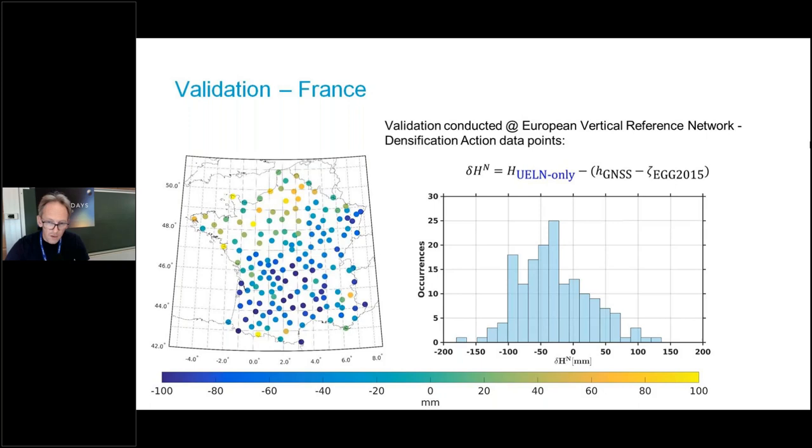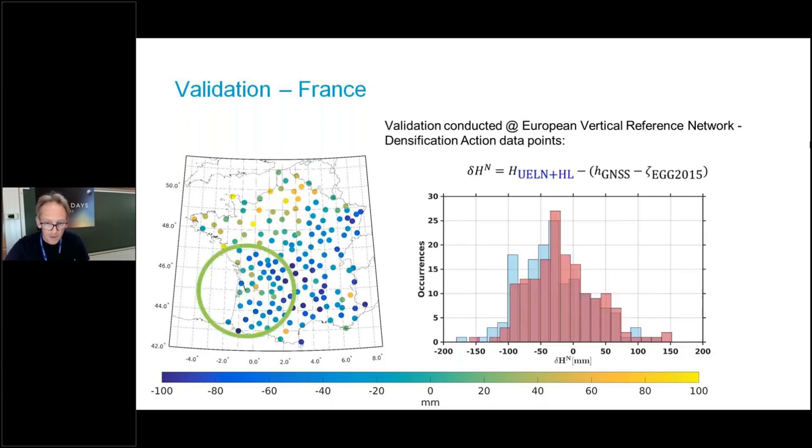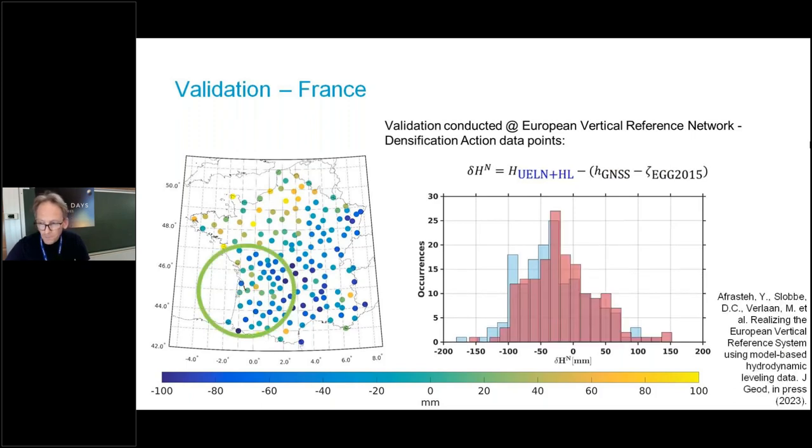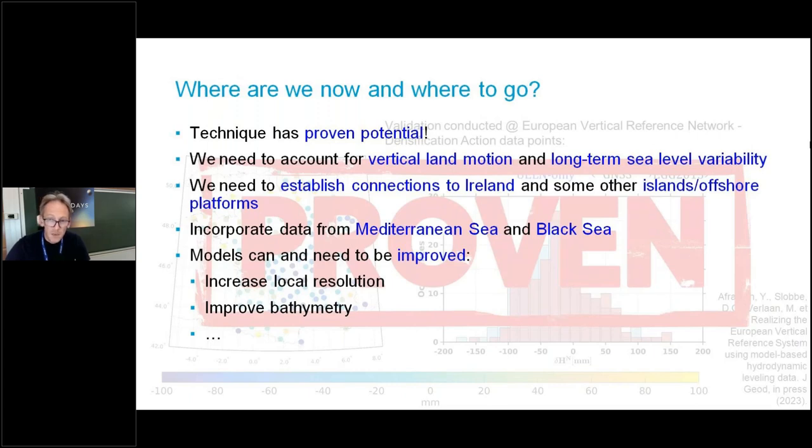In France, this is the situation when you look at the UELN-only solution: there's quite a strong trend. It's not so large as in the UK, but it's still quite a large signal present. By adding hydrodynamic leveling data, we basically get a reduction along the coast. By toggling between the two figures, you see there's a clear reduction in the numbers. The results of this study will appear soon in a publication in Journal of Geodesy, which is currently in press. There you can read every detail of how we managed to obtain the solution.